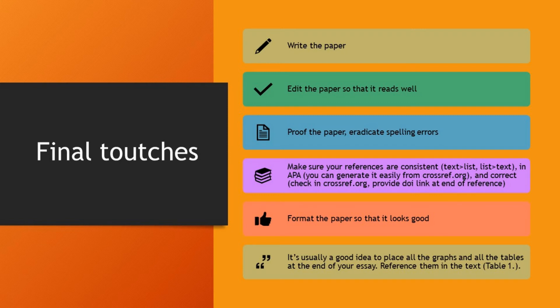Now let's talk about the final touches. Write your paper, then edit it so that it can be read — change the hat from writer to reader and edit the paper. Then proofread it and make sure there are no errors. This also means looking at your references — you can use Crossref to make sure your references are correctly formatted in APA, provide the DOI number, and identify each paper you reference. Make sure all references from the text are in the list, and all references in the list are in the text, so nothing is hanging free.